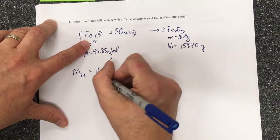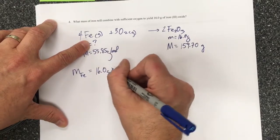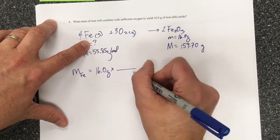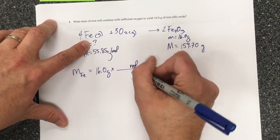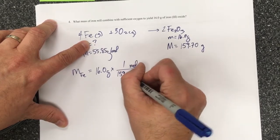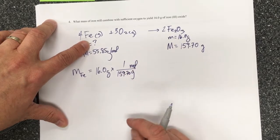But I know that there are 16.0 grams of iron 3 oxide. So I can get rid of the grams and be left with moles or chemical amount if I use the molar mass of the iron.